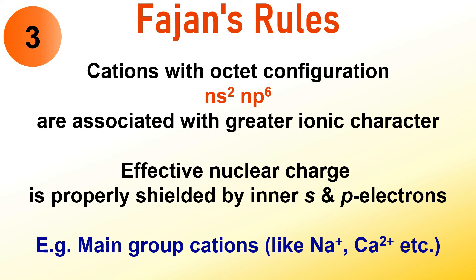And this is the third rule. Cations with octet configurations characterized by ns²np⁶ tend to exhibit greater ionic character in their compounds. This phenomenon is a result of the effective shielding of the nuclear charge by the inner s and p electrons. This results in an increase in the size of the cation. You know that larger cations are less effective at polarizing anions, leading to a lower covalent character and a more pronounced ionic character in the bond. Examples of such cations include main group cations like Na⁺, Ca²⁺, etc.